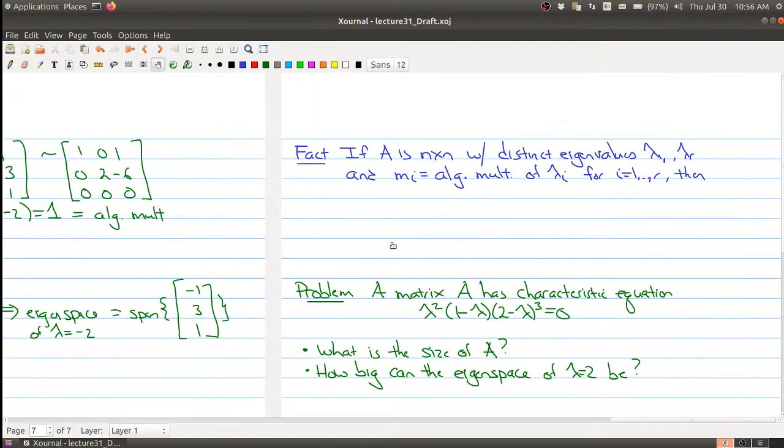So a couple things I want to mention before we wrap up today, some things about the algebraic multiplicity. If you have an n by n matrix with distinct eigenvalues lambda 1 to lambda r, and if mi is the algebraic multiplicity of lambda i, then the sum of the multiplicities will be equal to the size of the matrix.